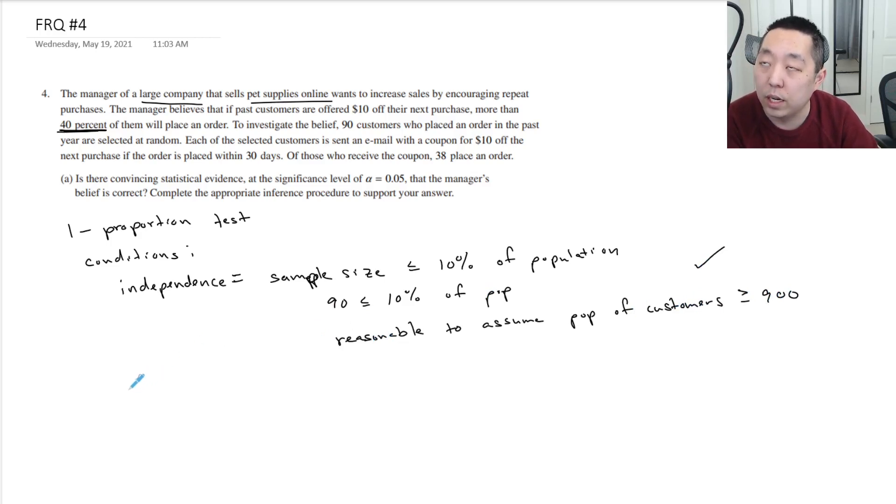Okay, what's the other one? Randomness. This one's easy. Let's see. Selected at random. It's given. Usually it's given in the problem statement for the randomness. But yeah, they're randomly selected.